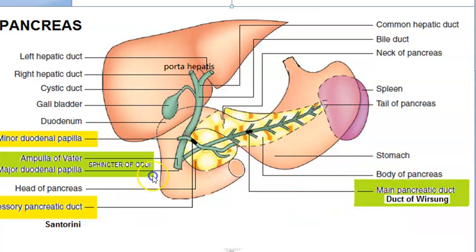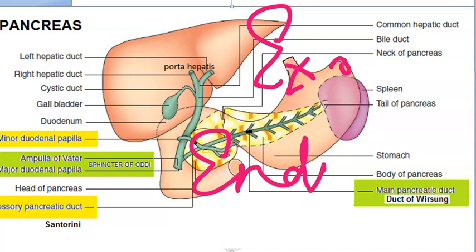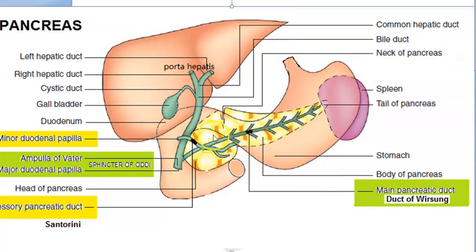The pancreas has two parts: an exocrine and an endocrine part. Exocrine means it has a duct. You can see there are actually two ducts — one accessory duct and one main duct. The main duct is the duct of Wirsung, and it opens at the ampulla of Vater where the sphincter of Oddi is present.